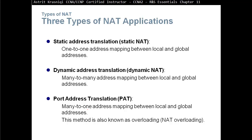Port address translation, also known as overloading or NAT overload, translates private IP addresses to a public IP address while also mapping port numbers. Using port numbers, this method allows many-to-one translation — we can have one public address and translate all of our private addresses into that one public address. Think of a small office or home office with 10 to 15 private IP addresses and only one public address — everything is being mapped into that one address using port address translation.